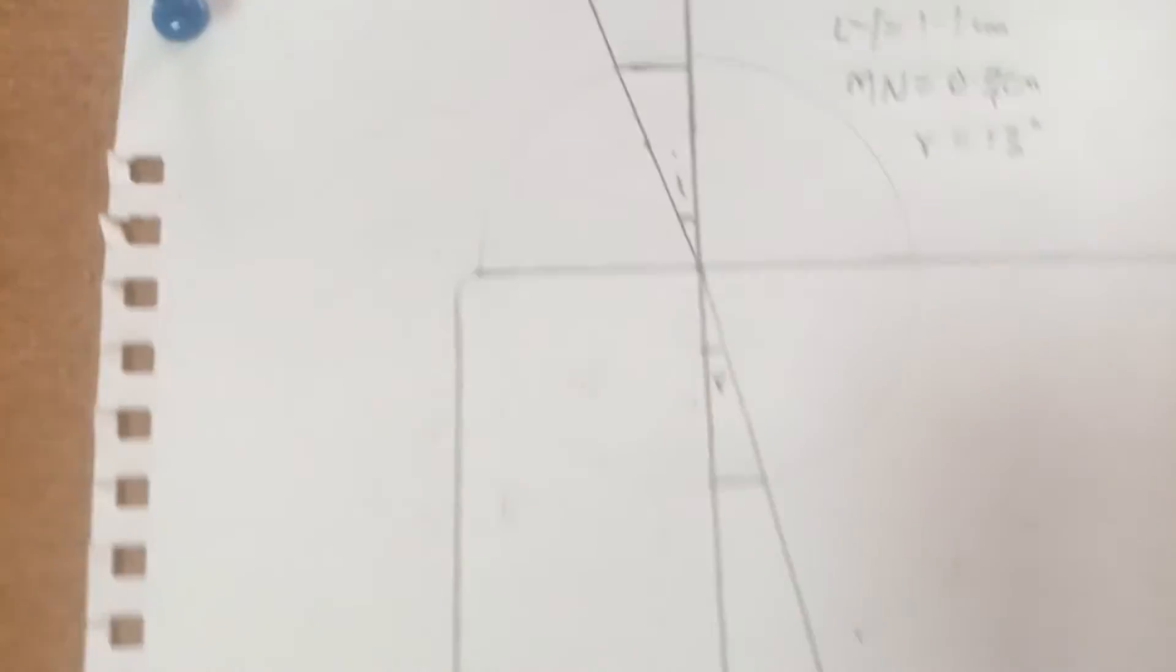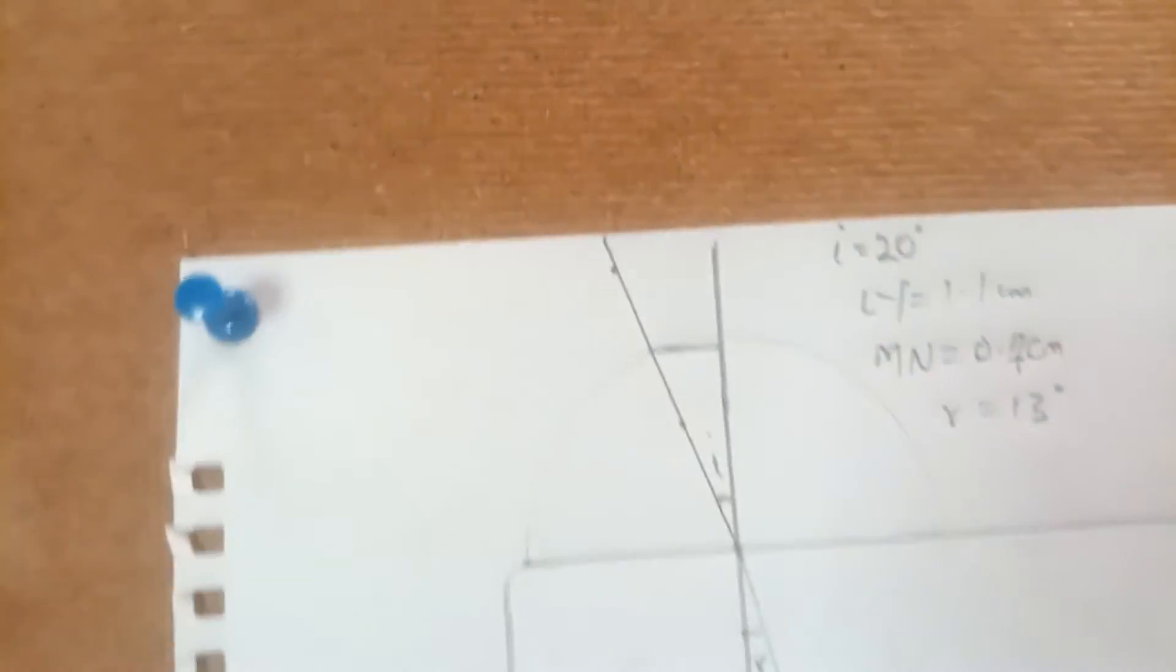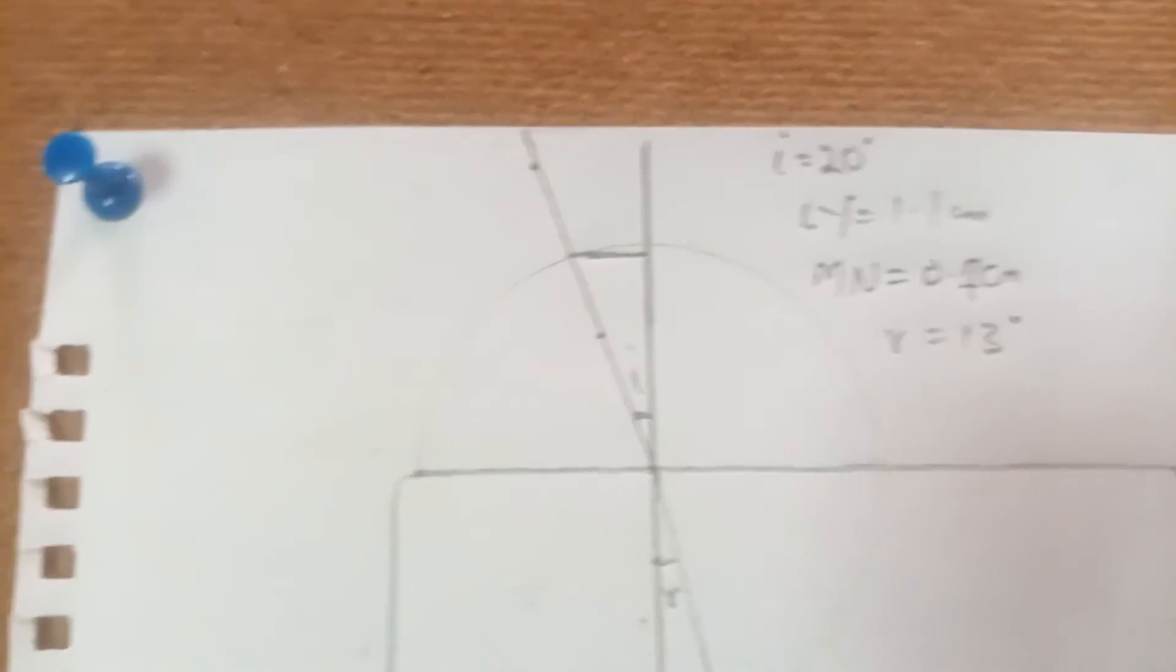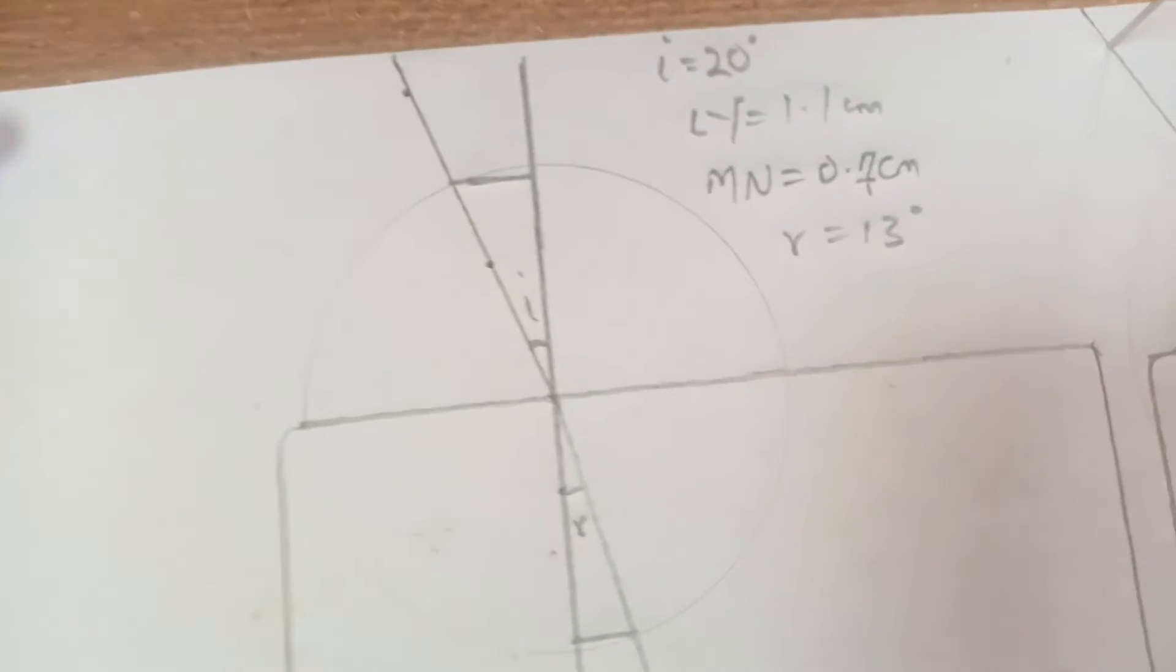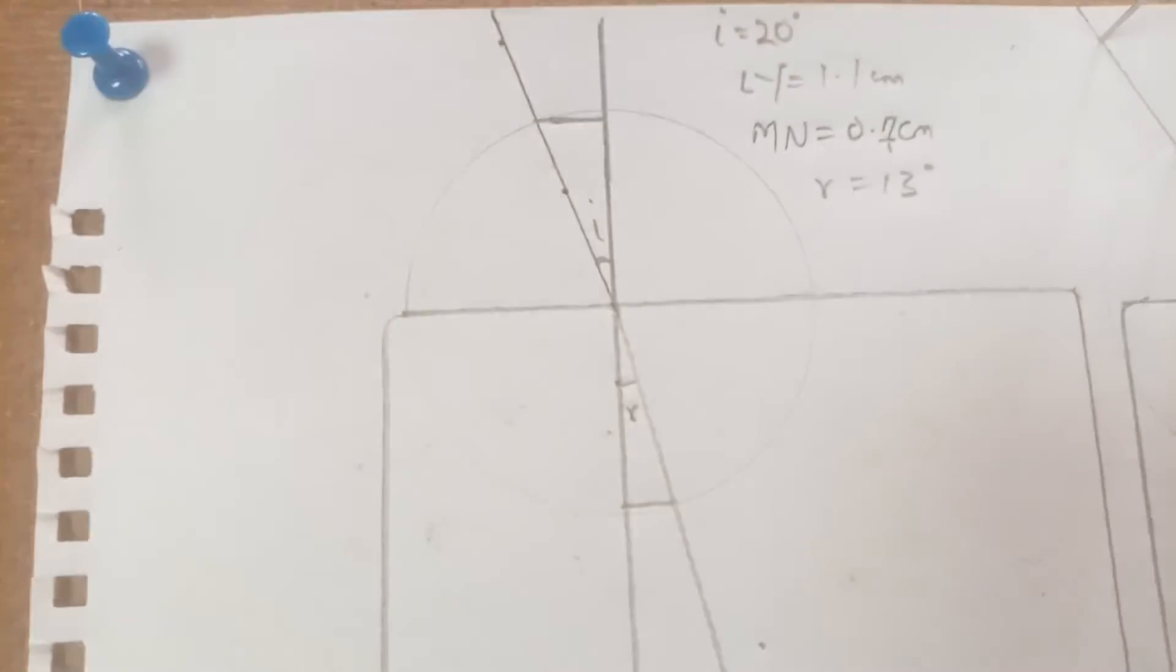So here is the measurement that I have gotten from. Now from the question we are asked to measure the perpendicular length from here to here and it was labeled LY. I measured that to be 1.1 cm and then also from this side I also measured that MN to be 0.7 cm. And then I also measured the angle of refraction here and it gave me 13 degrees. So this is the first part.